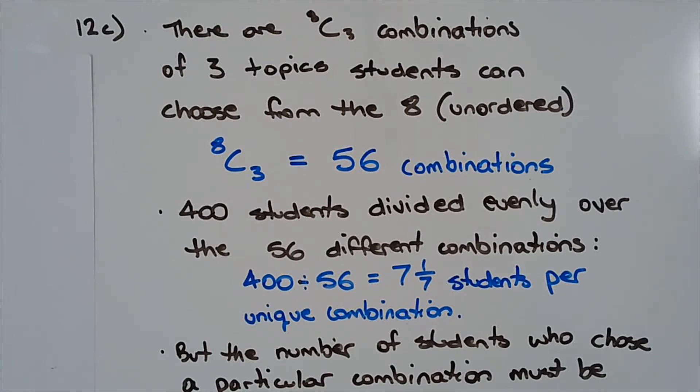Next, we'll consider the 400 students who passed a course, and a course consists of three topics. The 400 students divided evenly over the 56 different combinations is equal to seven and one over seven students per unique combination.